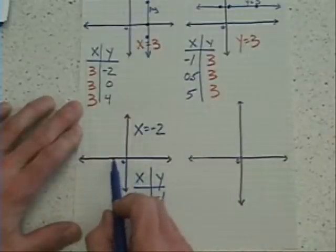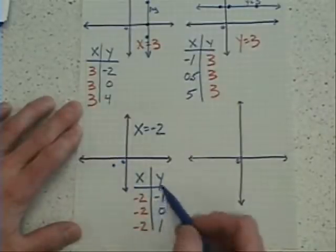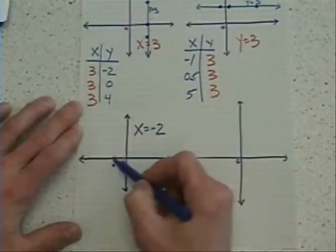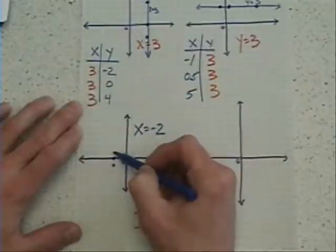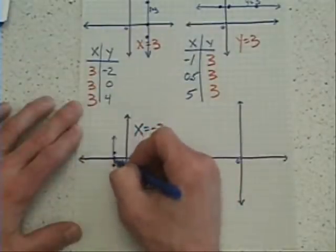Now I have 2 to the left and 1 down for my first value. Second value is 2 to the left and right on the line. And finally, 2 to the left and 1 up. Again, nice straight line. That's vertical.